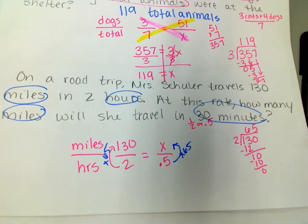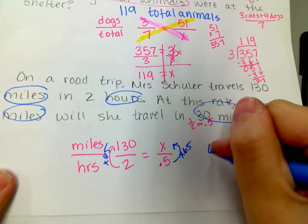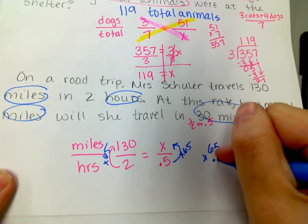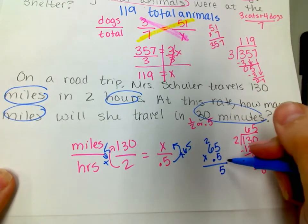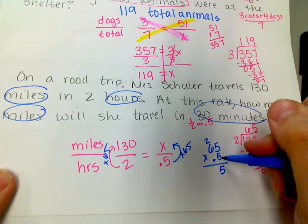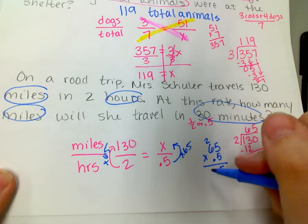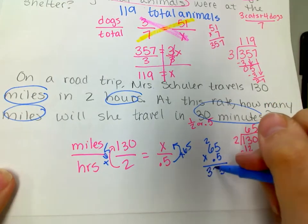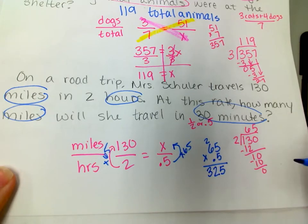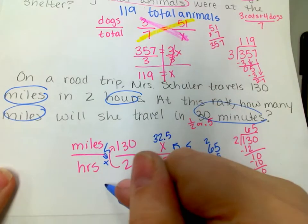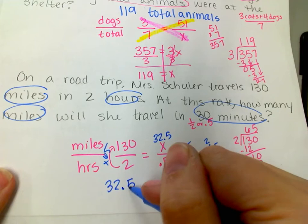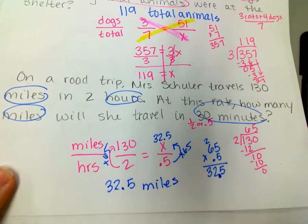So I'm going to do 65 times 0.5. 5 times 5 is 25, carry my 2. 5 times 6 is 30 plus 2 is 32. And then I count my decimal places. There's 1, so there's going to be 1. So that means my answer is 32.5. That's 32.5 miles.